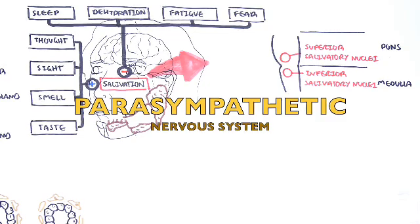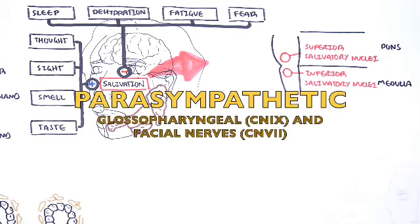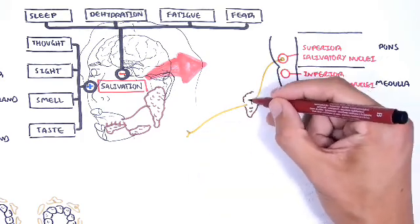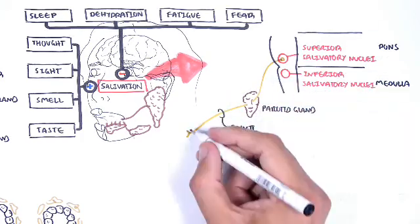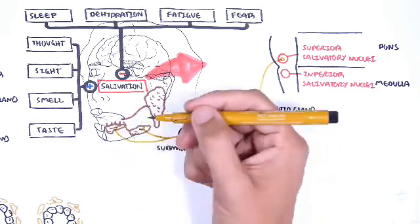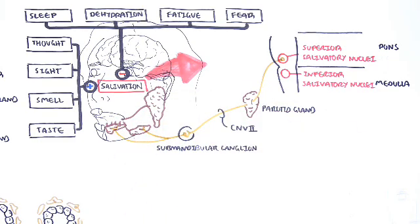The salivatory nuclei have parasympathetic neurons targeting the salivary glands via glossopharyngeal nerve and the facial nerve. Originating from the salivary nucleus in the pons, you have the facial nerve passing through the parotid gland and synapsing with a second neuron at the submandibular ganglion. This second neuron will supply the sublingual and submandibular gland, increasing parasympathetic tone, causing salivation.